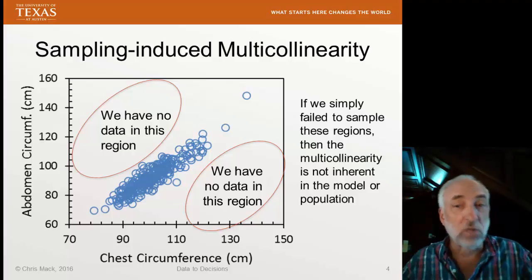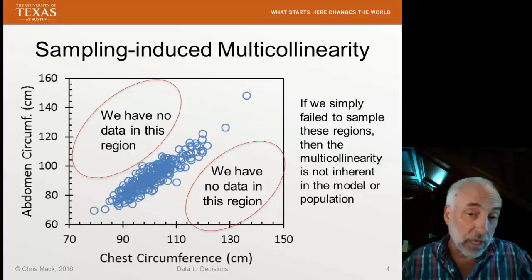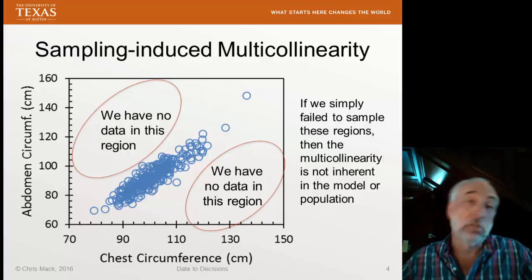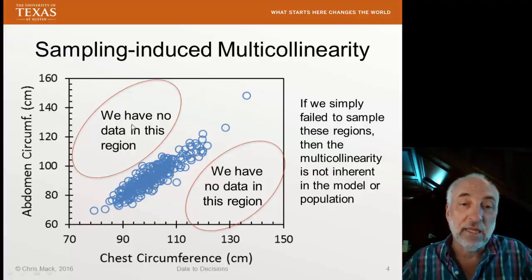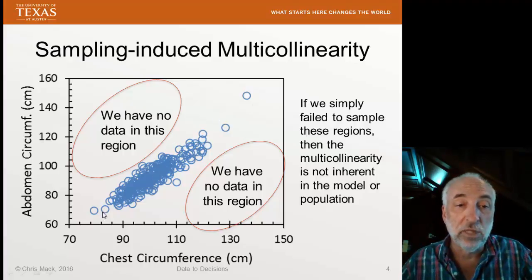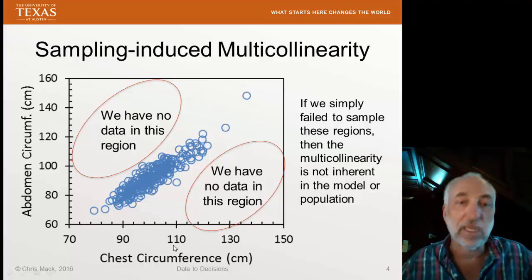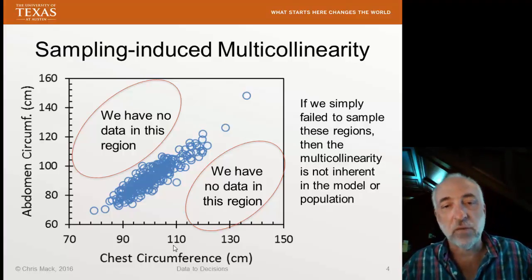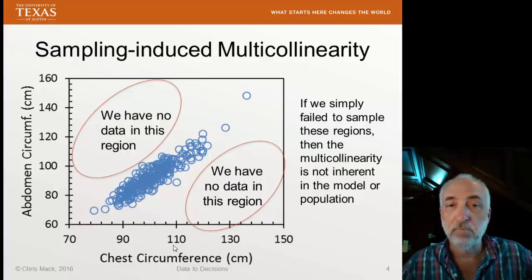If that's the case, then the multicollinearity is not inherent in the model and not inherent in the population. Alternately, it could be that there are no people in those regions whatsoever and that the collinearity between these two variables is real — we can't get out of it by changing our sampling. That's just an example; we'll come back to this when we start talking about addressing multicollinearity.